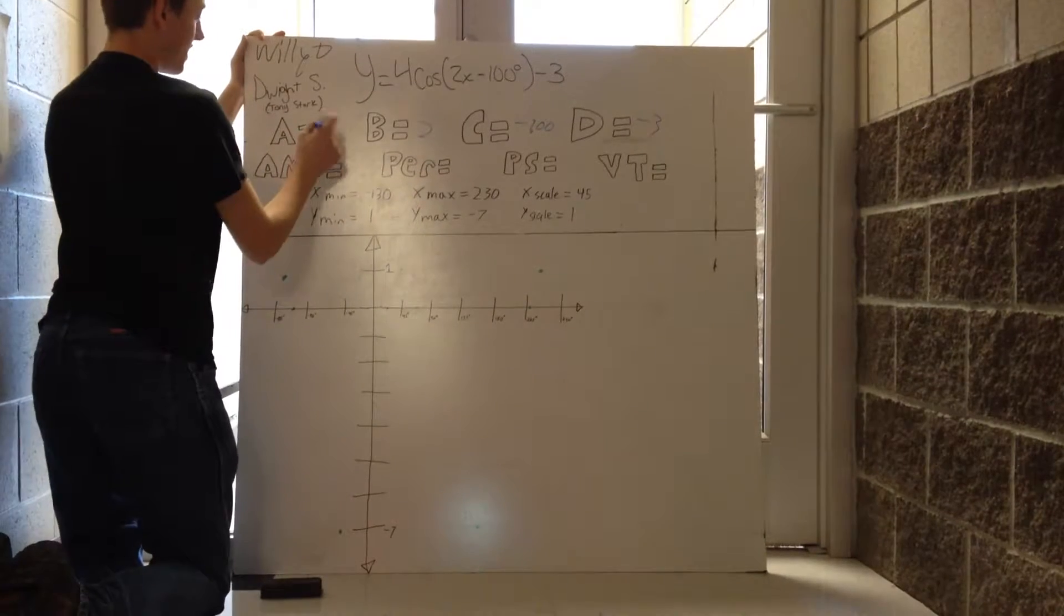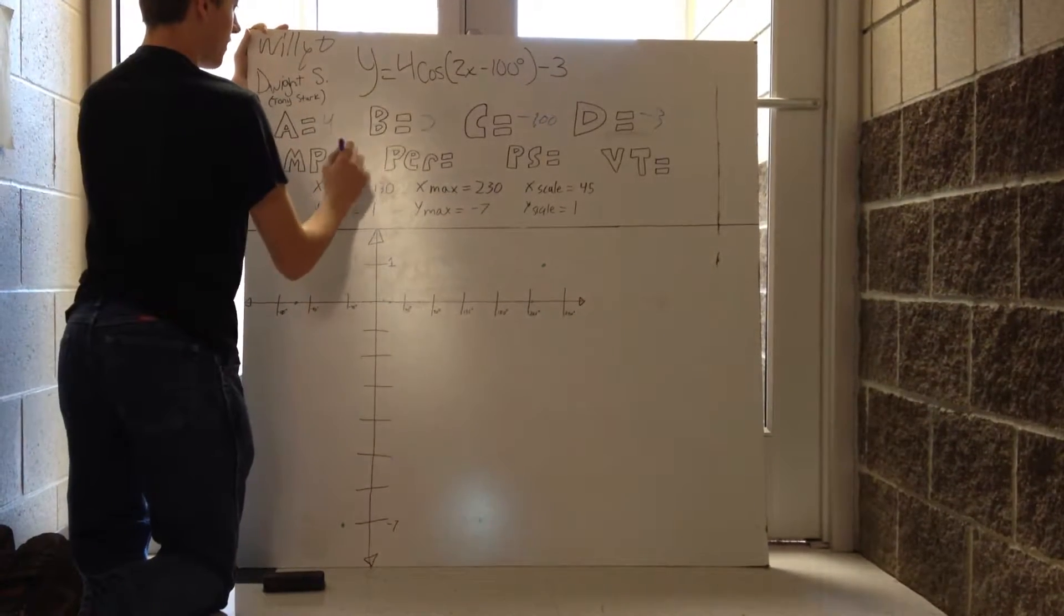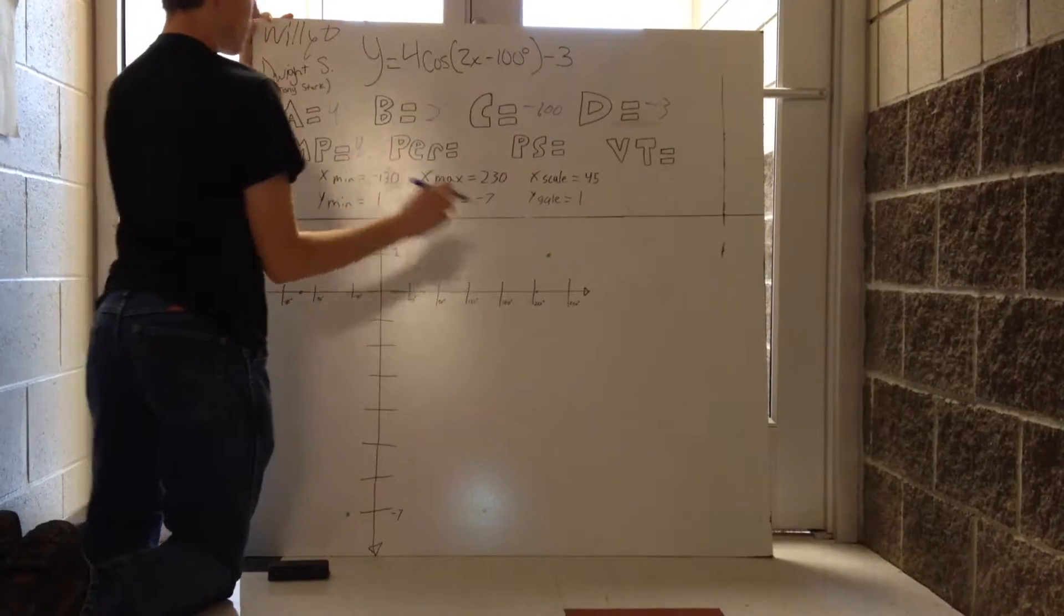Then down here for amplitude, it's just carrying that 4 down. Now, if that 4 was negative, it would be flipped as well, but it's not.